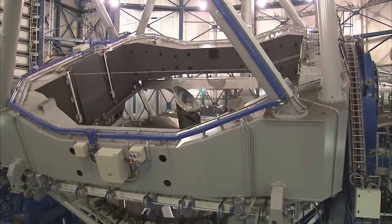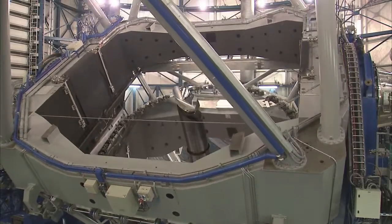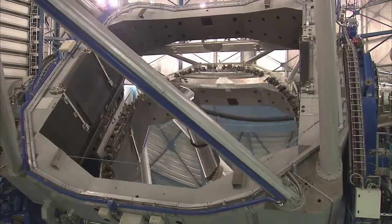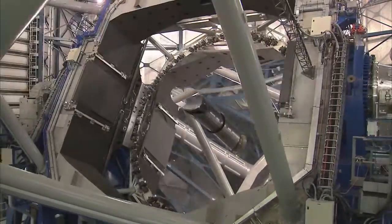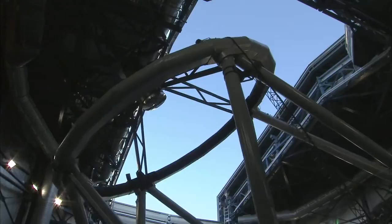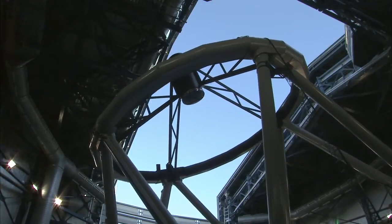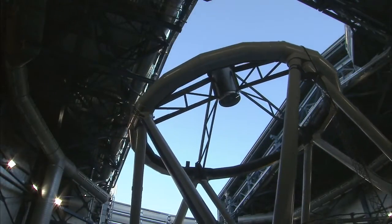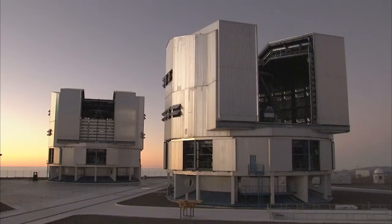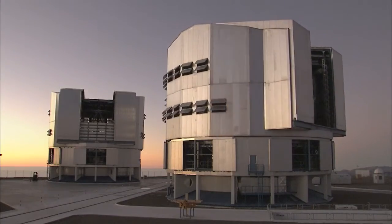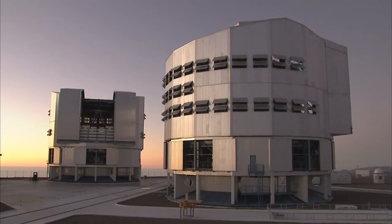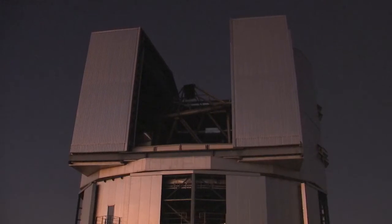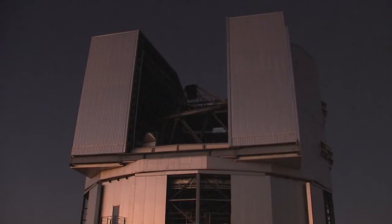Each of the four VLT unit telescopes has a primary mirror with a diameter of 8.2 meters. Such big mirrors are necessary because they collect more light and provide sharper images. Under ideal conditions and with the appropriate technology, the individual VLT unit telescope can see details of objects in space that are equivalent to viewing a tennis ball on the International Space Station from the Earth. This corresponds to a distance of about 350 kilometers.